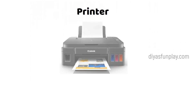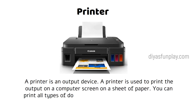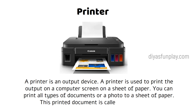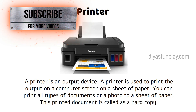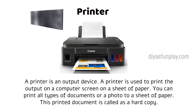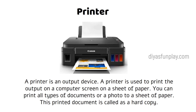Printer. A printer is an output device. A printer is used to print the output shown on a computer screen onto a sheet of paper. You can print all types of documents or a photo to a sheet of paper. This printed document is called a hard copy.